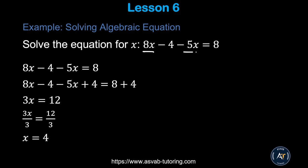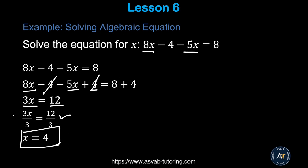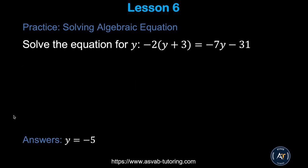For equations with multiple variable terms, first simplify by combining like terms. For example, 8x and 5x combine to give 3x. Then eliminate the constant by adding 4 to both sides — always use the opposite operation. That gives 3x = 12, and dividing both sides by 3 gives x = 4. Pause and try this yourself.